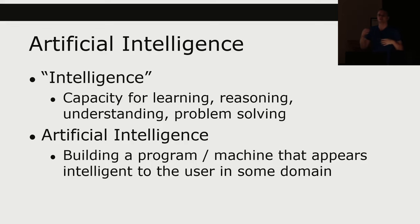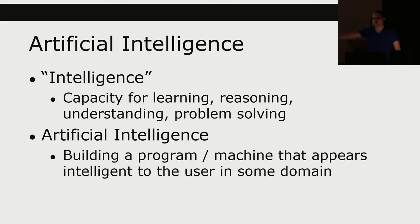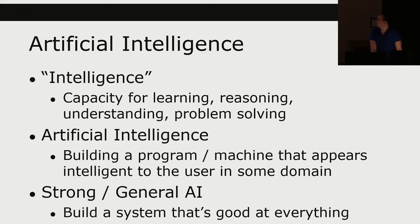There's this notion of strong or general AI — trying to build a system that's good at everything. Despite what Google or Facebook might tell you, we're not even close. ChatGPT is the closest we've come, but you can very quickly get it to make stupid statements. The term AI was coined by John McCarthy, a Turing Award-winning computer scientist, who defined it as the science and engineering of making intelligent machines.